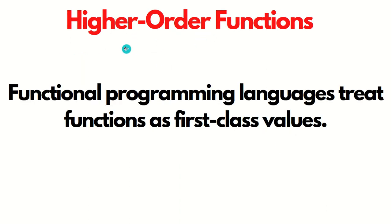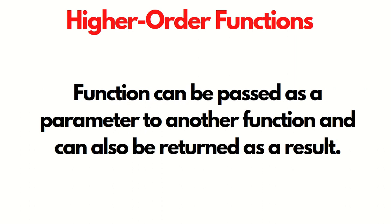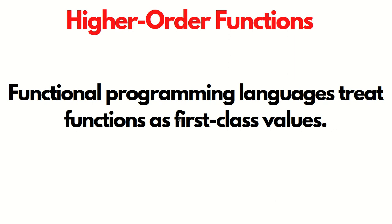Next, let's look at higher order functions. Functional programming languages treat functions as first-class values — just like other variables such as integers and strings. A function can be passed as a parameter to another function and can also be returned as a result. Functions which can take other functions as parameters and return functions as results are called higher order functions.